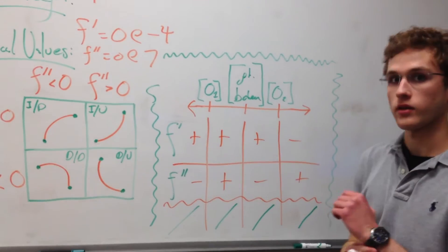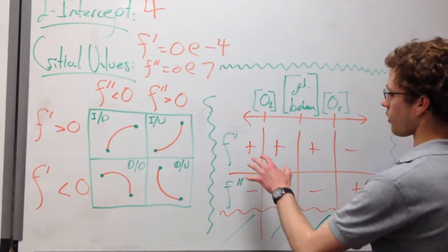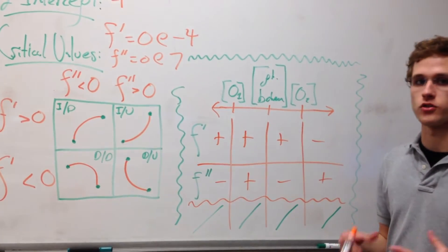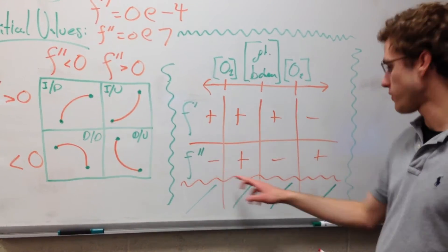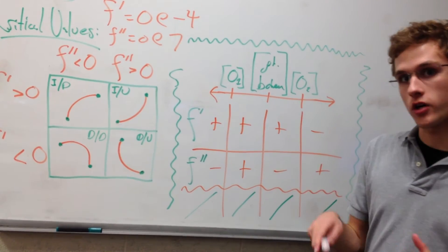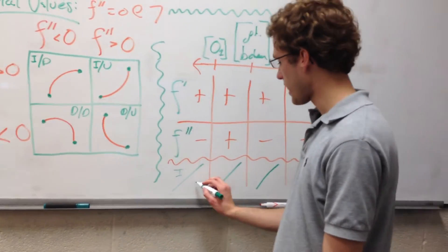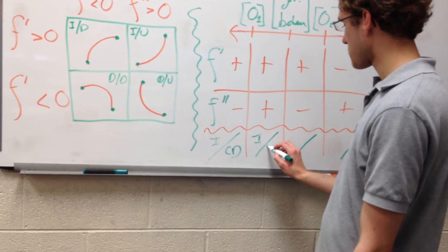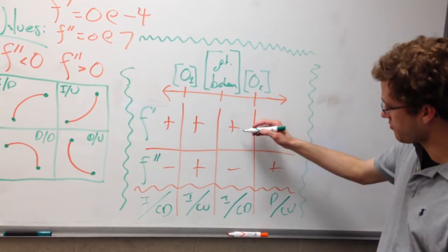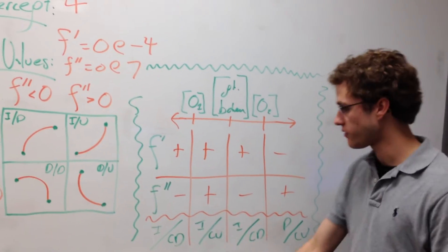This tells us our intervals of increase, decrease, and concavity. Everywhere f prime is positive, the function is increasing. Everywhere f prime is negative, the function is decreasing. Everywhere f double prime is negative, the function is concave down. Everywhere f double prime is positive, the function is concave up. So from our values: positive/negative means increasing concave down; positive/positive means increasing concave up; negative/negative means decreasing concave down; and negative/positive means decreasing concave up.